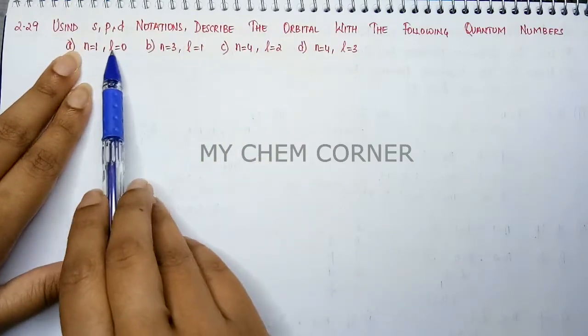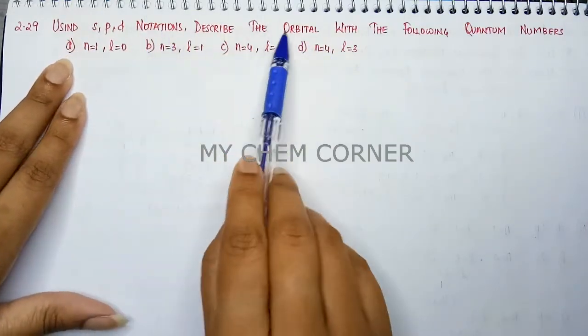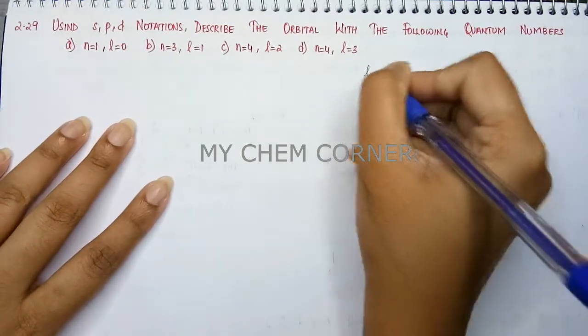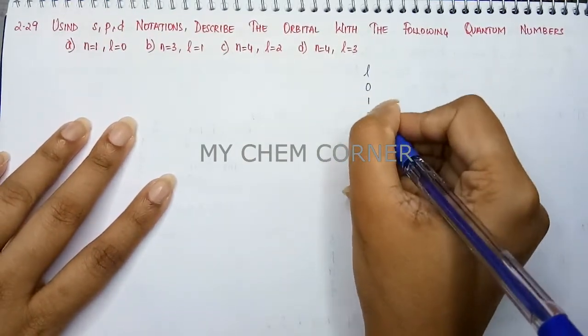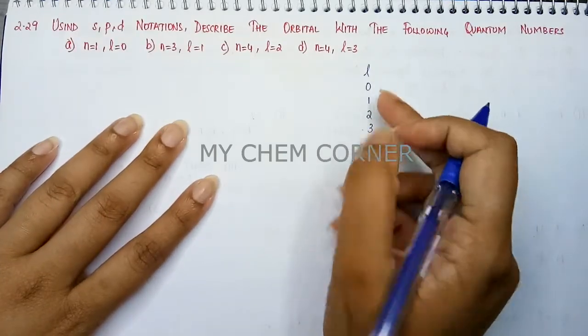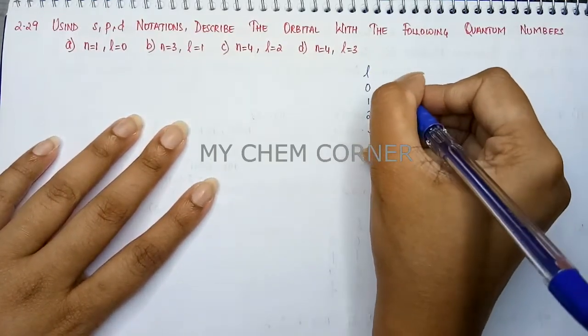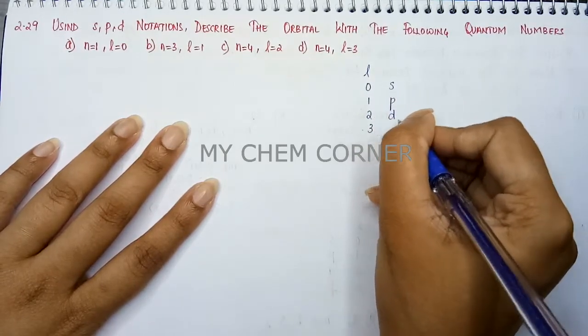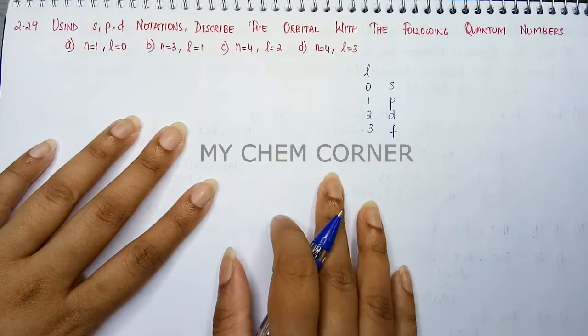So now whenever we have l value and you need to describe what the orbital is, I told you a simple method. You need to know the l values for the respective orbital. So when l is equal to 0 you have s orbital, l is equal to 1 p orbital, l is equal to 2 d orbital and l is equal to 3 f orbital.